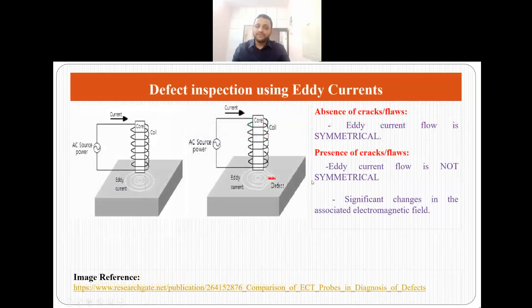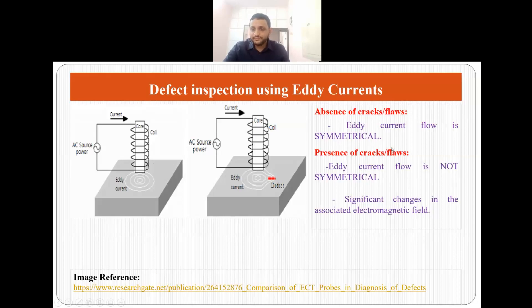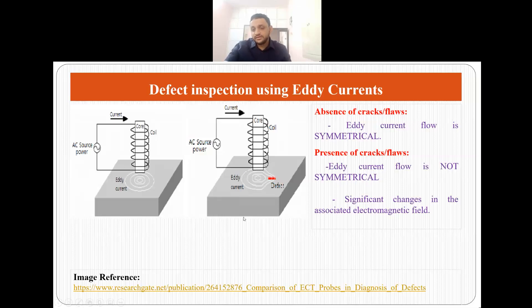Now how do we really detect defects using eddy currents? In a normal crack-free or flaw-free material, eddy currents will flow in a symmetrical manner. But if there are cracks, flaws, or inhomogeneities present in a material, then the eddy currents will not flow in a symmetrical manner — they have to travel a longer path than required in the absence of cracks, and this change is detected whenever a defect is present.